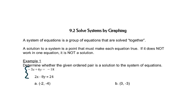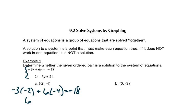In this first example, we'll just check to see if a point is a solution. It has to work in both places to be a solution. So let's put in negative 2 for x and negative 4 for y. Does it equal negative 18? Negative 3 times negative 2 is 6, and 6 times negative 4 is negative 24, and that does equal negative 18. But it has to work in both places, so let's try the other equation.